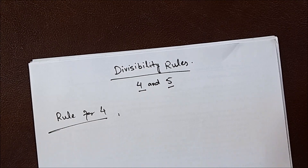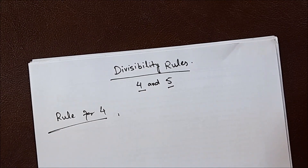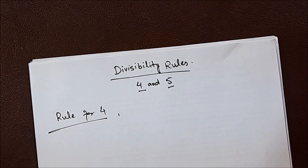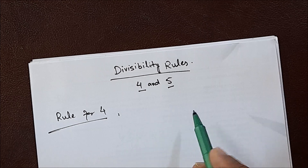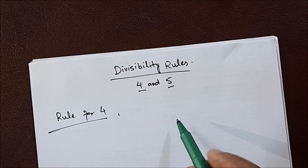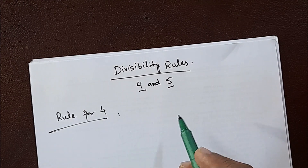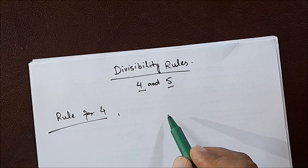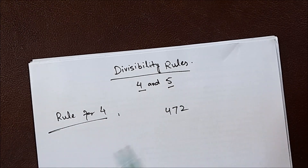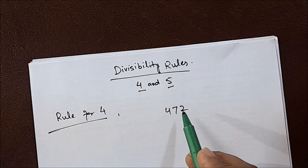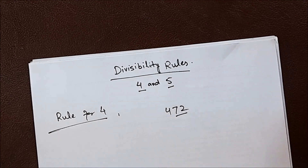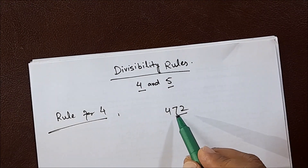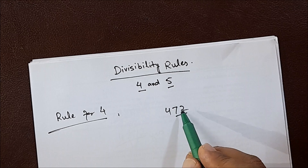Now we know the table of 4 up to 100. It is easy, but if it is above 100, or greater than thousands and ten thousands, it is difficult for us. Therefore we will look at the last two digits — the unit and tens of that number. For example 472: we will see the unit and tens. If they are divisible by 4, we will say that the whole number is also divisible by 4.